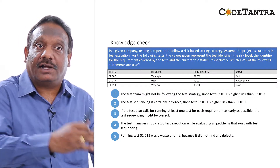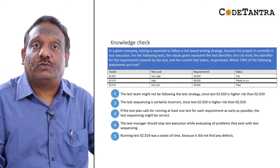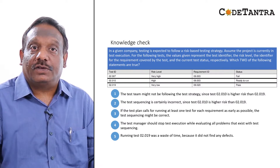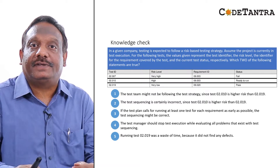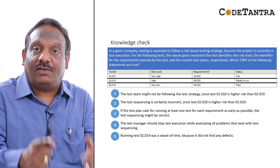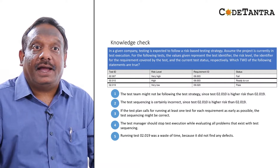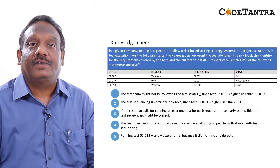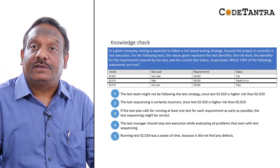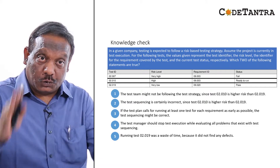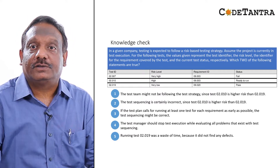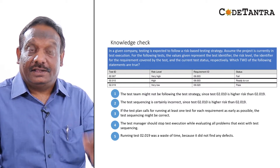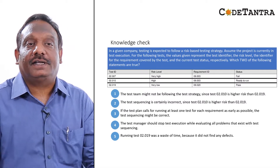Now let's do a knowledge check. In a given company, testing follows a risk-based testing strategy, and the project is currently in test execution. There is a table providing: the test case identifier, the risk level associated with each test, the requirement identifier covered by each test, and the current status of each test. You need to identify which two of the following five statements are true.